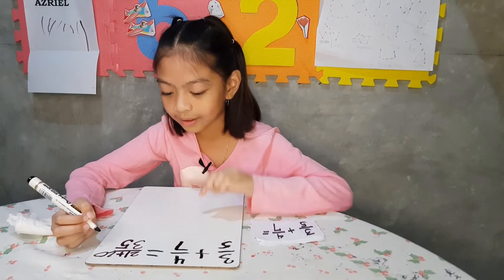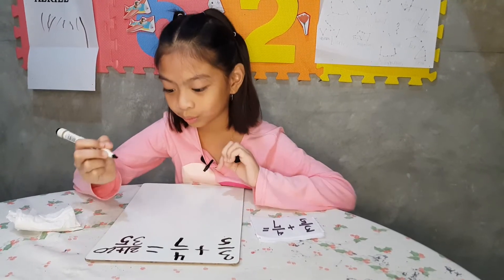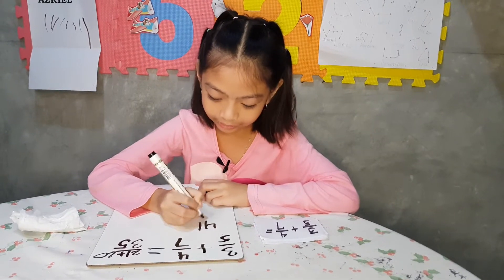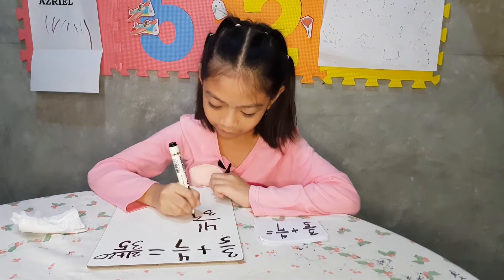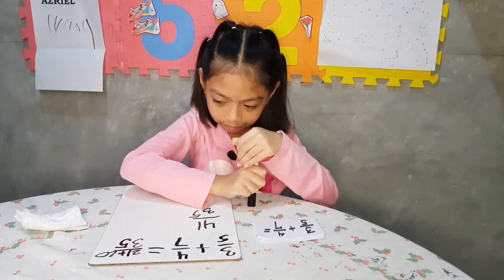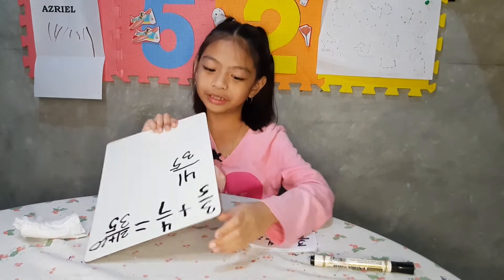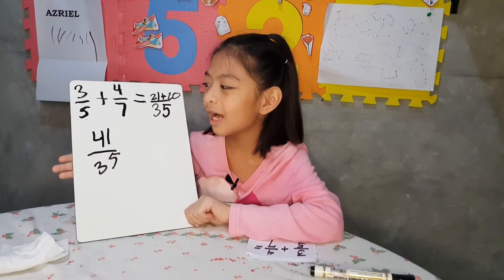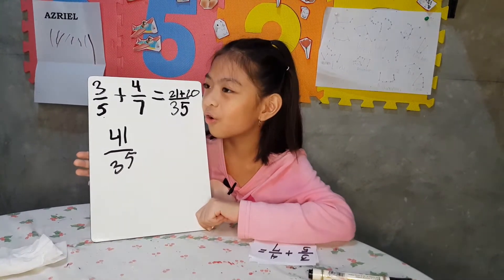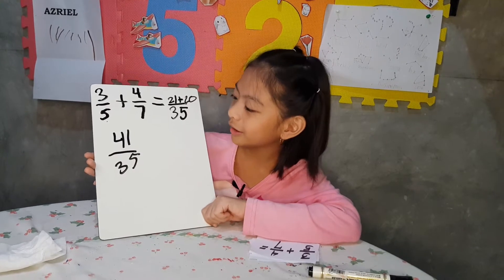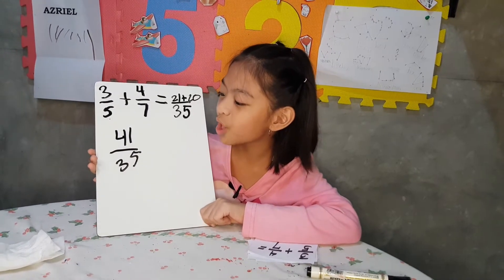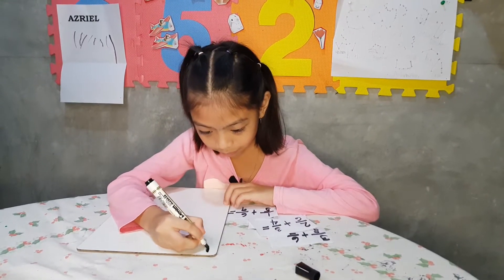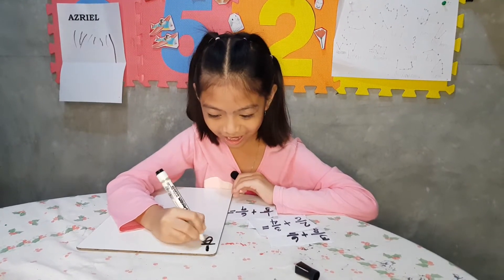21 plus 20 equals 41, and then put the 35. So the answer of 3 over 5 plus 4 over 7 equals 41 over 35.